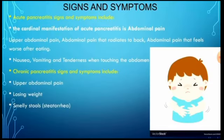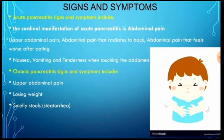Signs and symptoms: the cardinal manifestation of acute pancreatitis is abdominal pain — specifically upper abdominal pain that radiates to the back, worsens after eating — along with nausea, vomiting, and tenderness on abdominal palpation. Chronic pancreatitis signs and symptoms include upper abdominal pain, weight loss, pale/fatty stools, and steatorrhea.